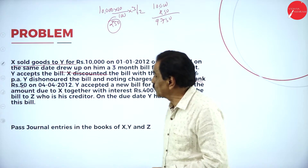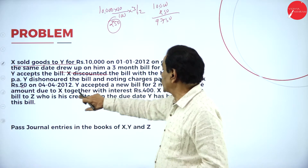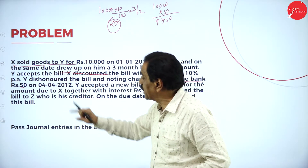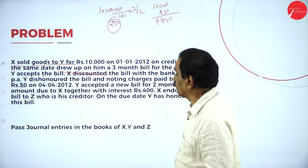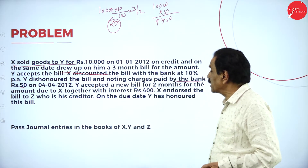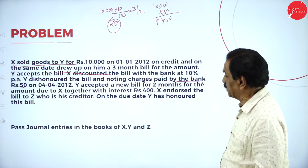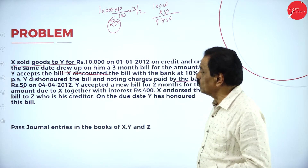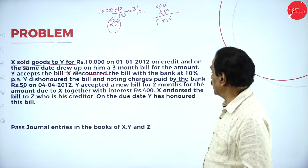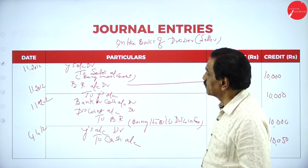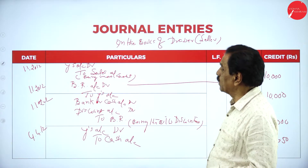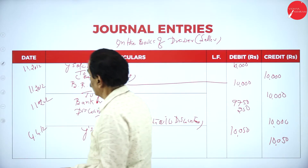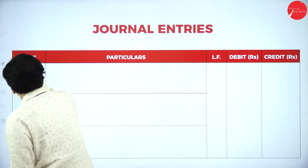On the due date, Y has to pay the bill. Noting charges paid by bank is 50, on 4-4. Y accepts a new bill for 2 months on the same day. Y has to pay the interest. New bill accepted by Y. So on 4-4-2012.